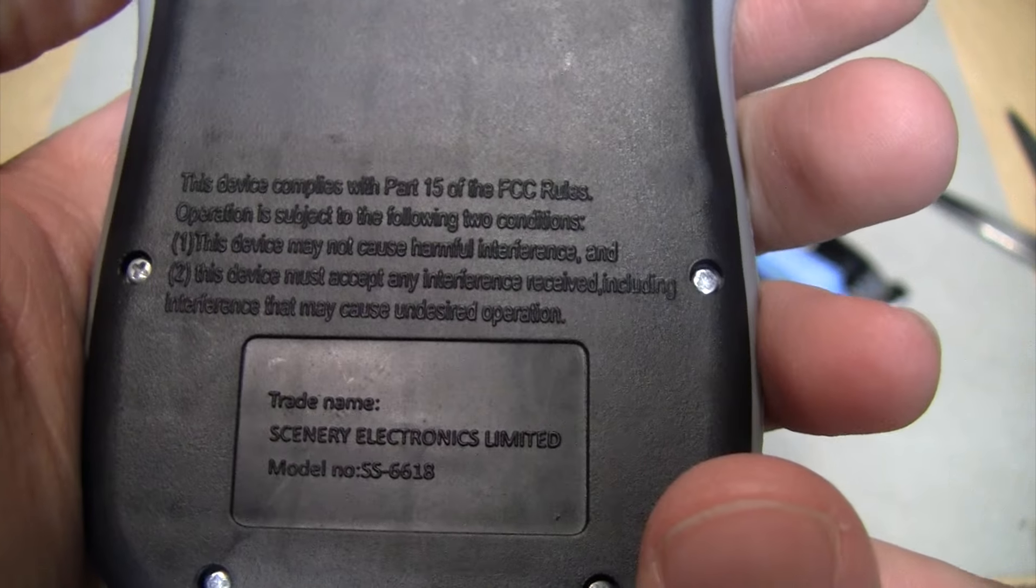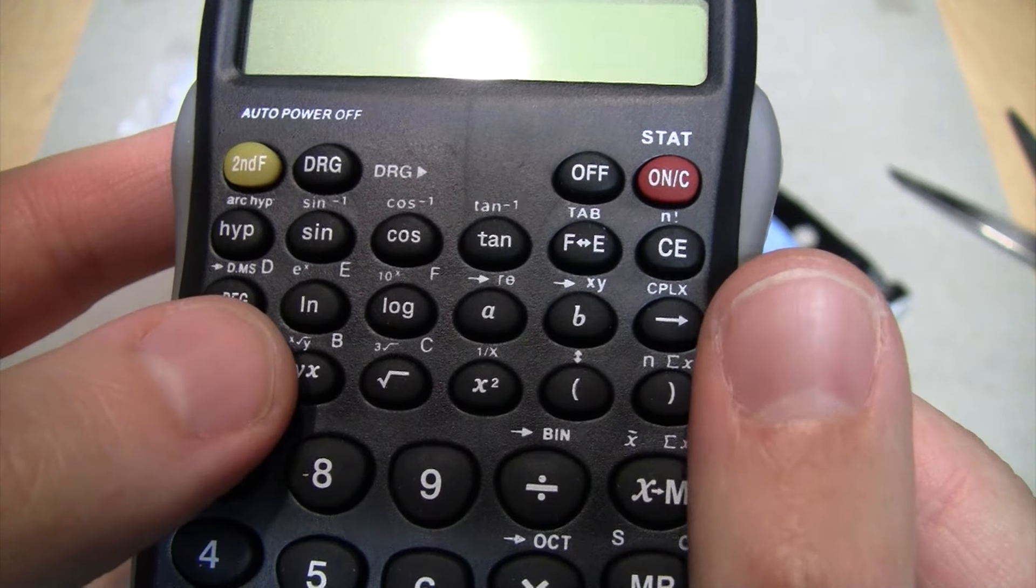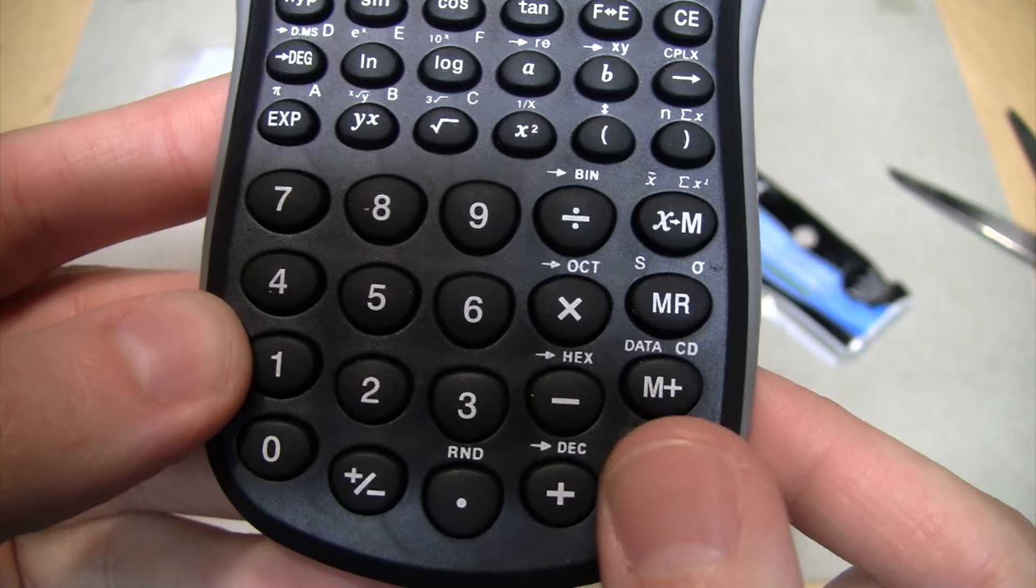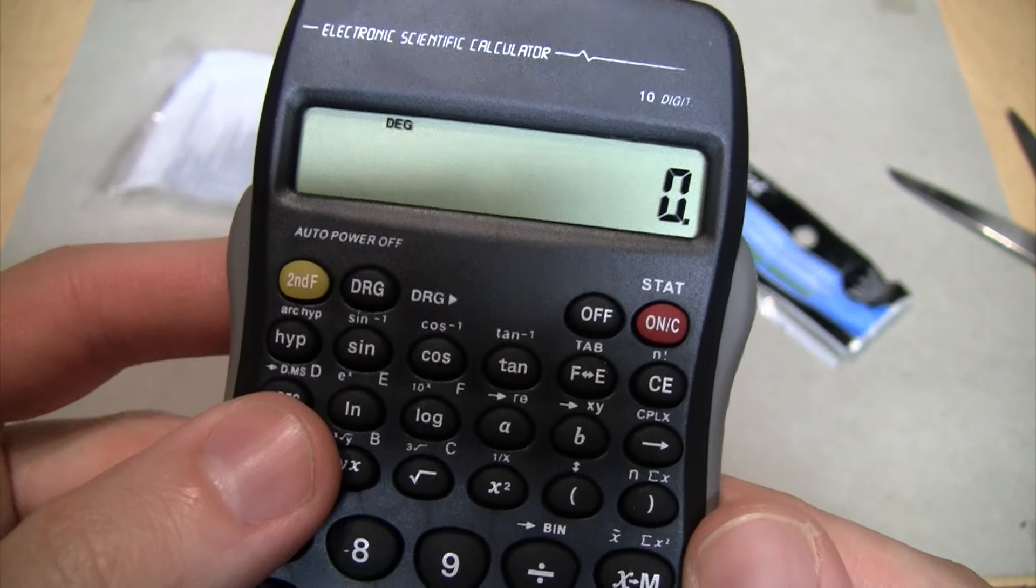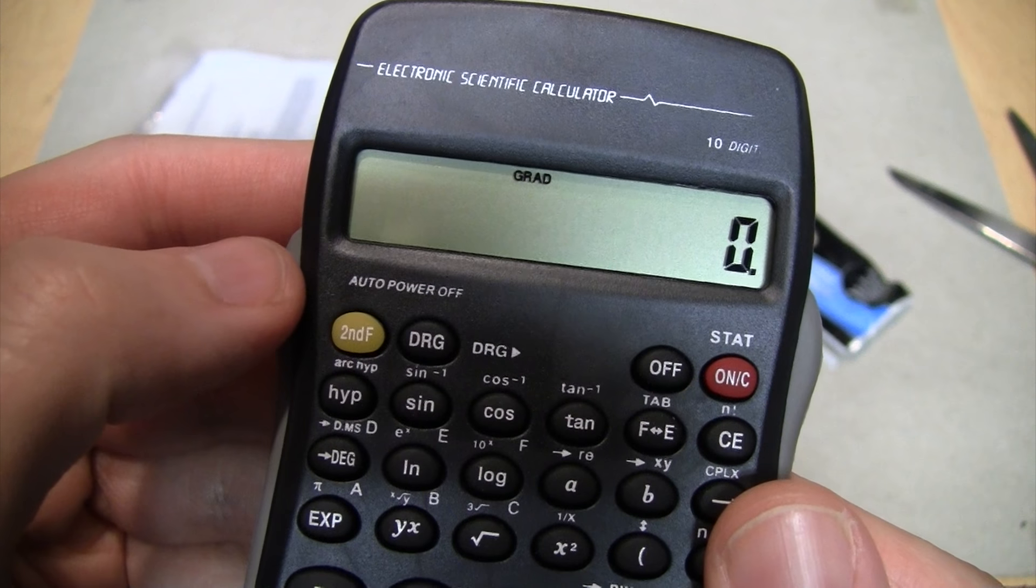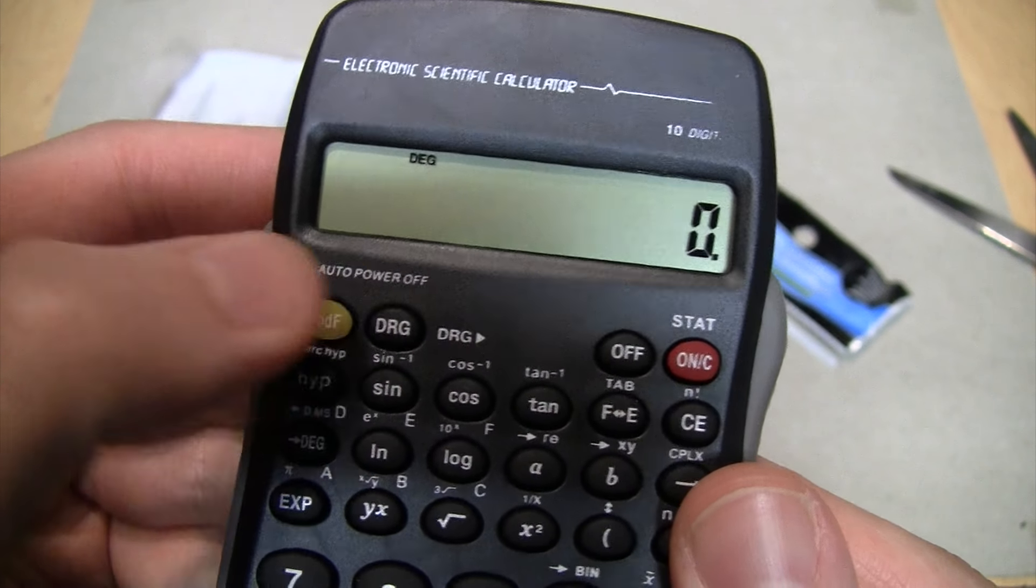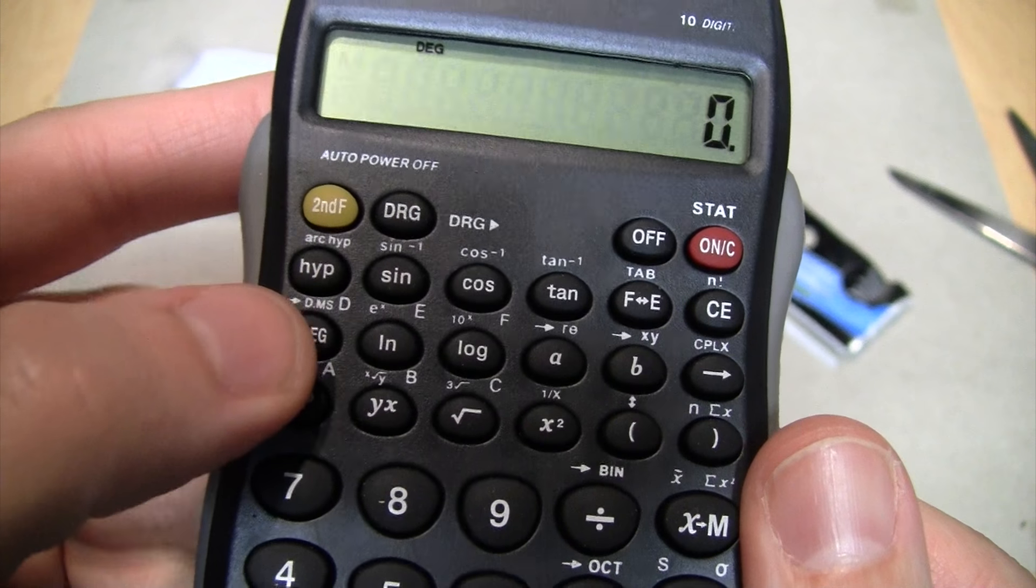There it is, the one dollar electronic scientific calculator. I mean, isn't it obvious it's electronic? Has there even been a mechanical scientific calculator ever made? I guess that's the actual company that makes it, Scenery Electronics Limited. And there are those tiny buttons with a lot of sub functions. The main number and function buttons are a little bit bigger, but they're still pretty small.